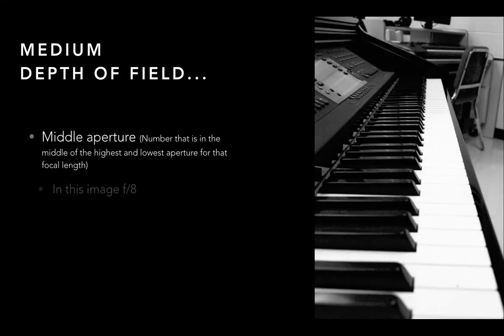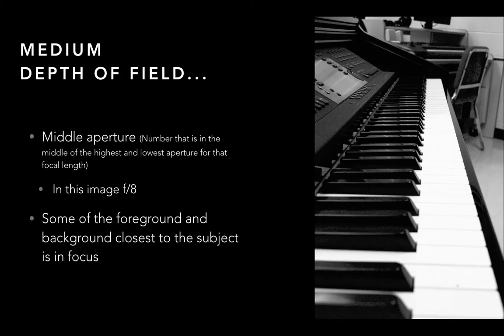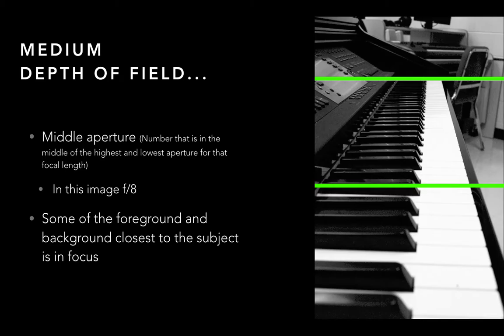If we adjust the aperture to a middle aperture, again in this situation it's the best use of my optics and I have it set to f/8. You'll see I'm focused on almost the same area — I really haven't moved my camera, I just changed the setting — and you'll see that now this area has gotten a lot larger. There are more of the black keys that are in focus. You'll also notice at the bottom of the image the keys are not as blurred; I can now see the lines in between each of the keys.